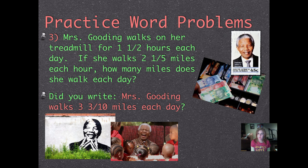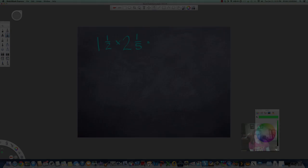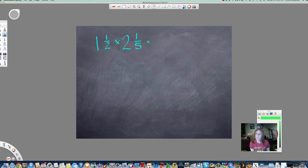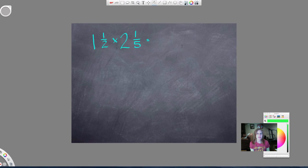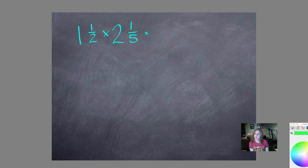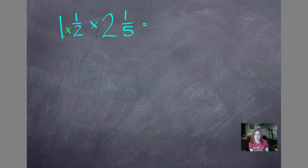Did you write, and you should have given me words because it's a word problem, Mrs. Gooding walks 3 3/10 miles each day? Let's see how we figure that out. I am trying to figure out if I multiply 1½ hours × 2⅕ of a mile, how much I'll get. I'm going to convert my mixed numbers into improper fractions to do that.